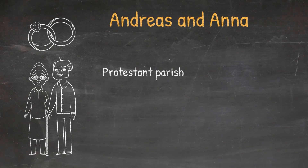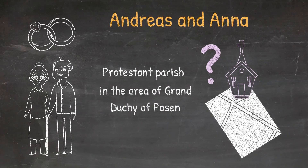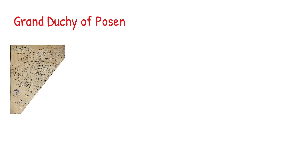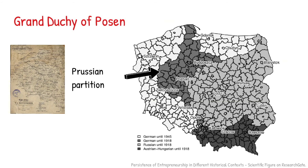How can we find Andreas and Anna's marriage and try to locate a Protestant parish in the area of the Grand Duchy of Posen? Since we Googled the name, we know that when created, the Grand Duchy of Posen became part of Prussia, which means we need to look in the Prussian partition of Poland. We also know that the current area of the Grand Duchy of Posen corresponds roughly to the current Greater Poland Voivodeship area.